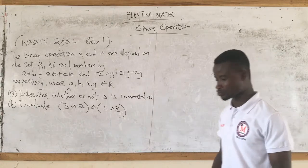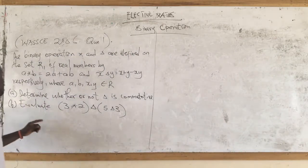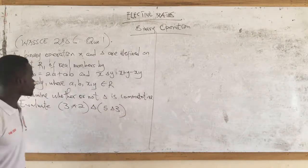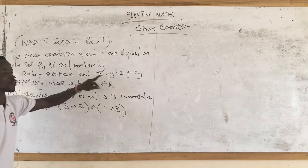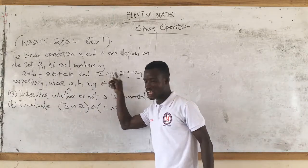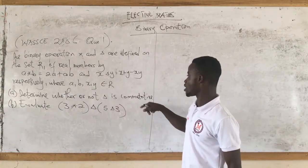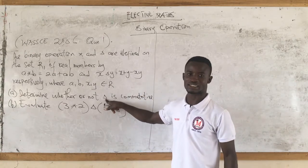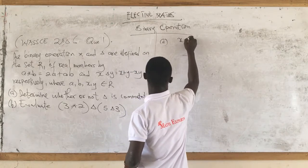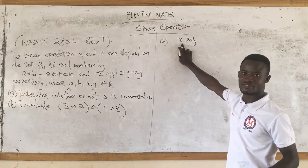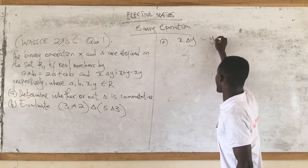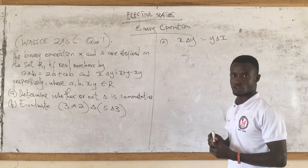Looking at this question, we have to determine whether or not delta is commutative. Don't forget the two relations given — one is for star, the other is for delta. The question references the delta relation, so we are going to check whether x delta y equals y delta x.